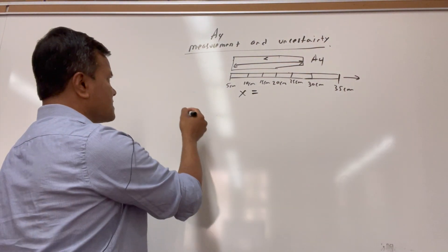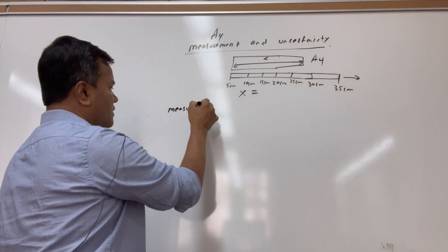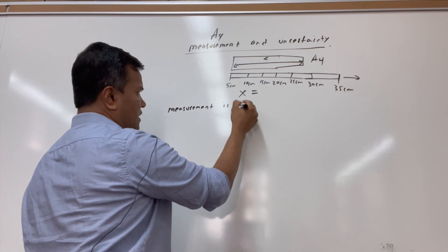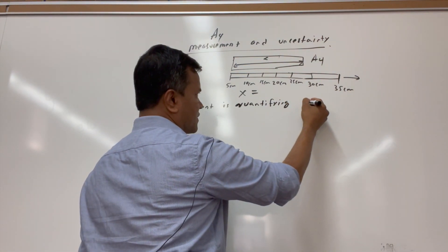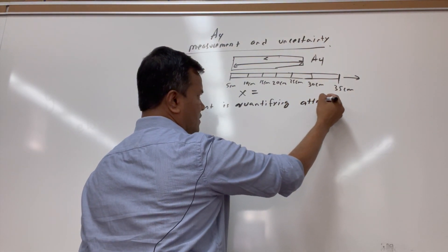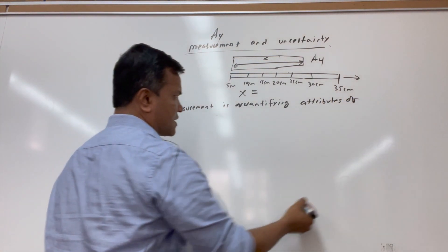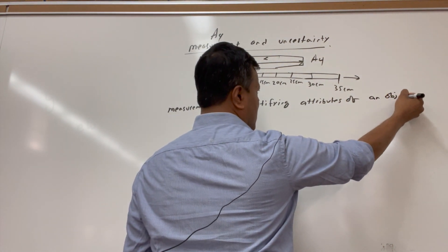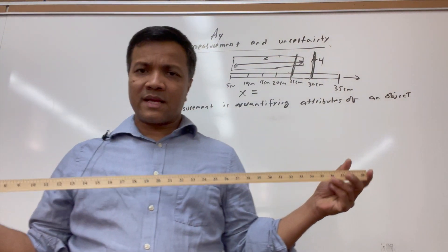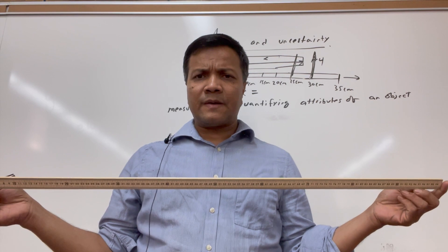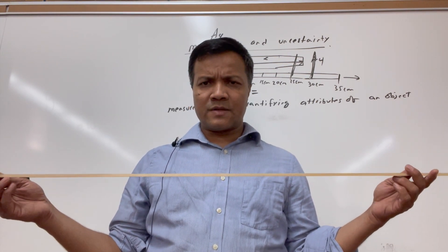So what is measurement? Measurement is quantifying attributes of an object — in this case, the A4 paper. This is the ruler. A ruler gives us access to the information. I can put the ruler and find the value of the longest side of the A4 paper.